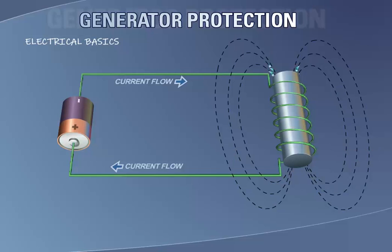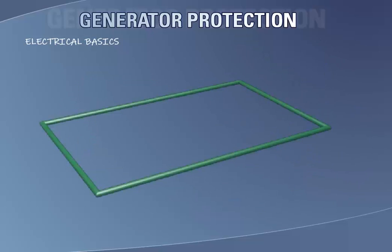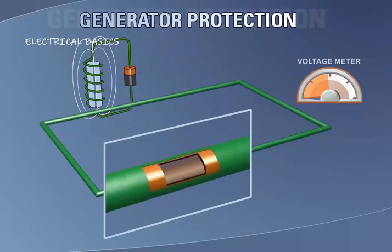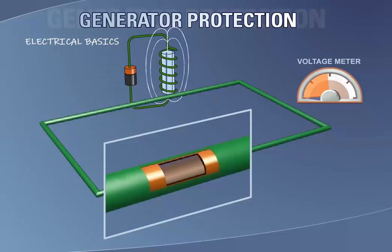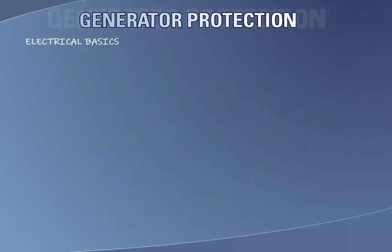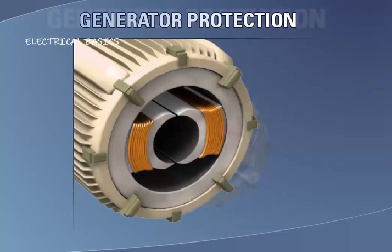The magnetic lines of flux will leave the north pole and flow to the south pole, returning to the north pole through the iron core. When magnetic lines of flux cut through a conductor, a voltage is induced in the conductor. The magnitude of the voltage is proportional to both the strength of the magnetic field and the speed with which the magnetic field cuts through the conductor.